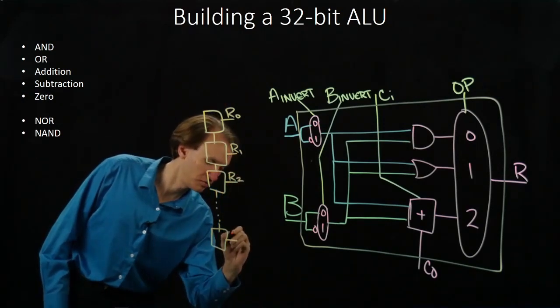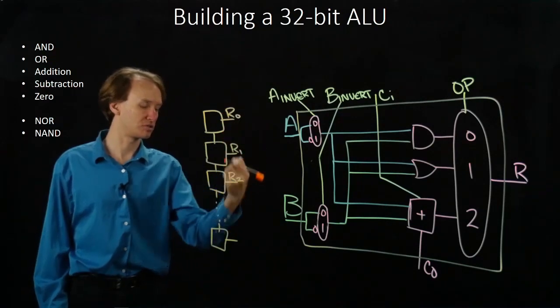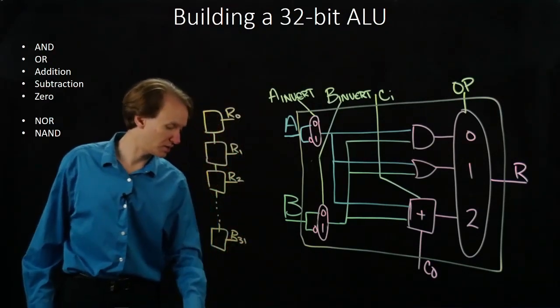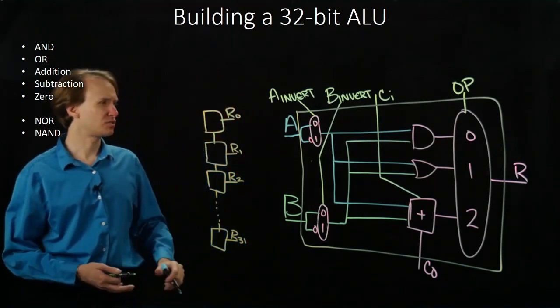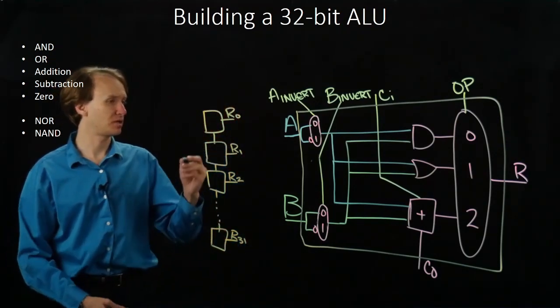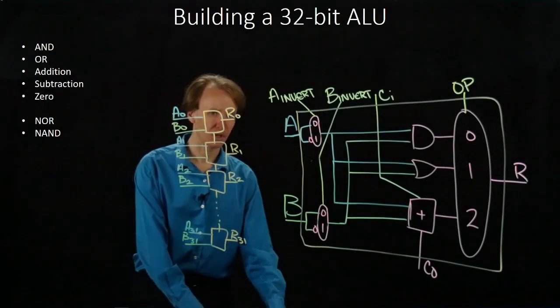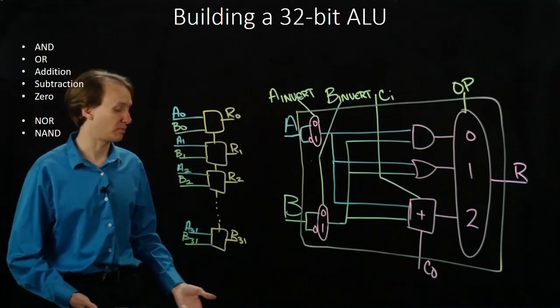So I'd have 32 of them, all the way from 0 to 31, each of which is getting a different pair of input bits for A and B, and producing a corresponding result bit.